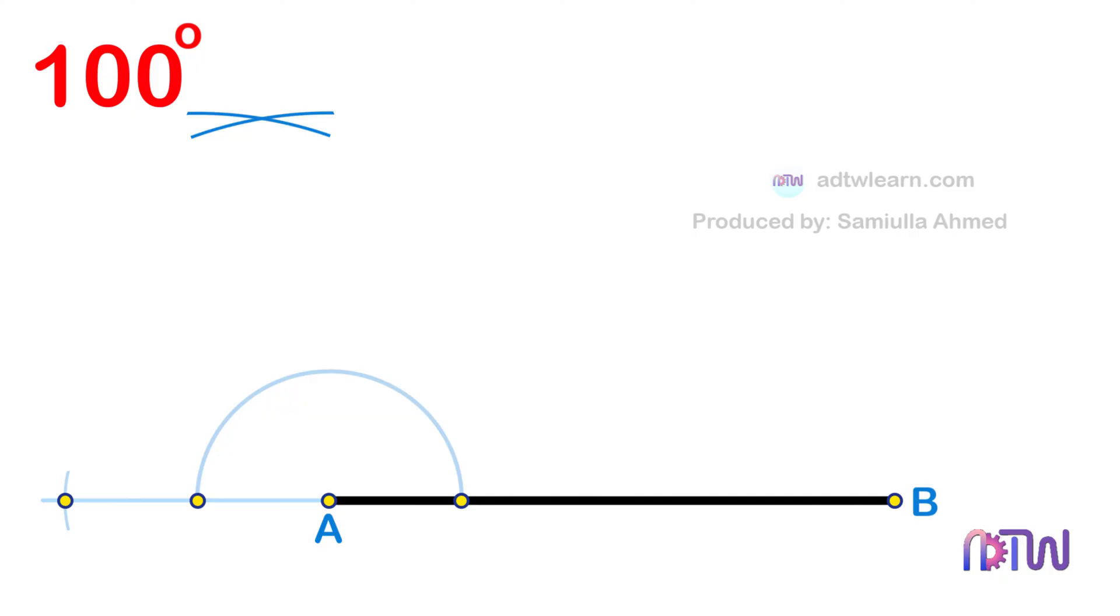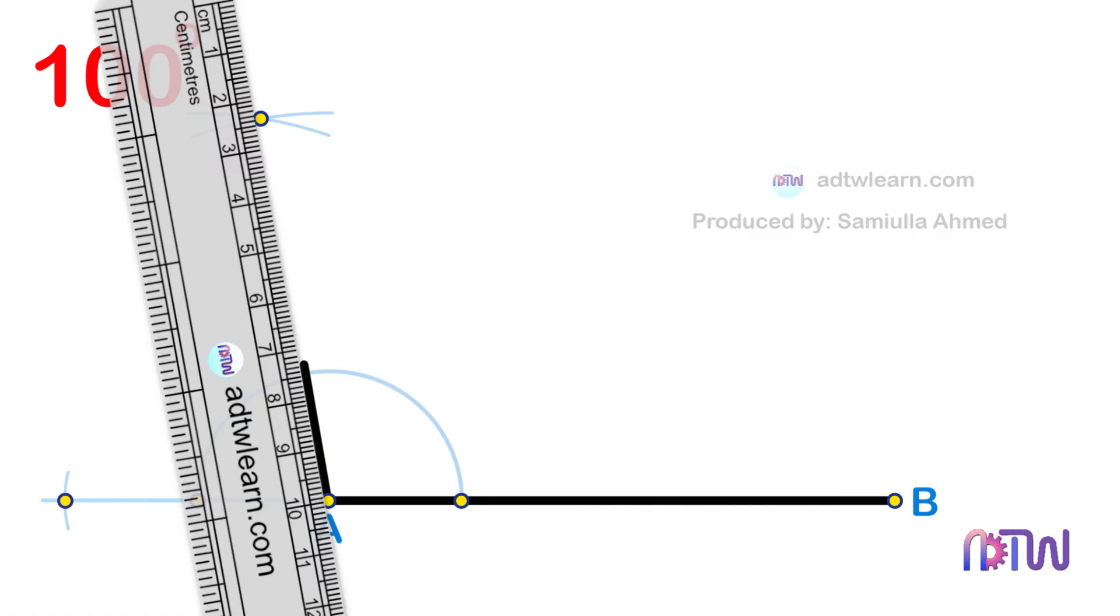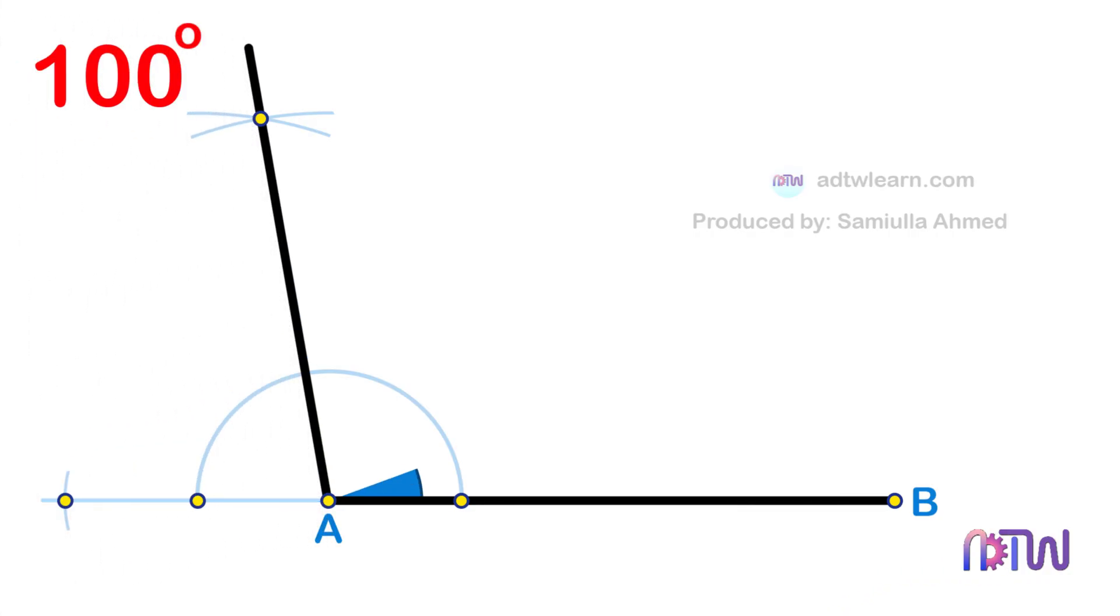At the end, draw a line passing through this point from the endpoint A of the line segment. The angle made by this line with the horizontal is 100 degrees.